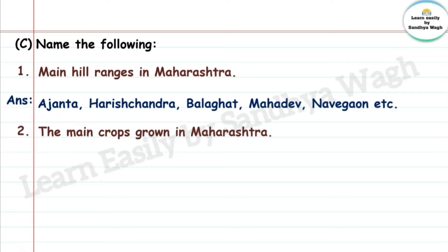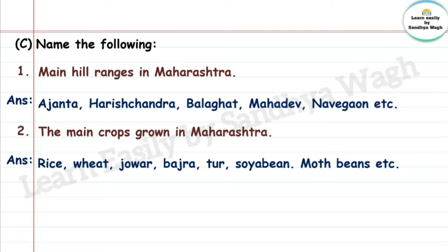List question: Crops grown in Vidarbha region include Toor, Soya Bean, Moth Beans, etc. Moth Beans means Matki.